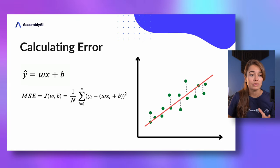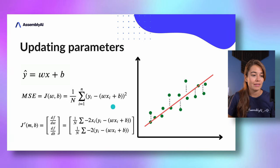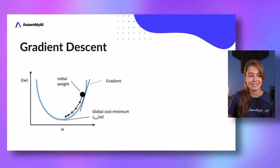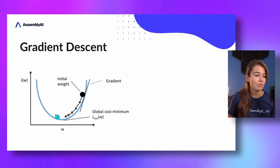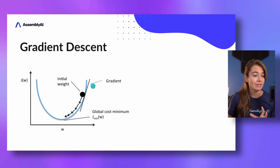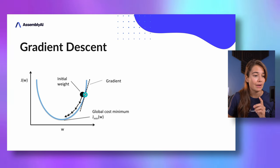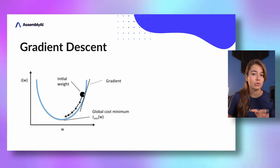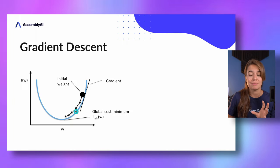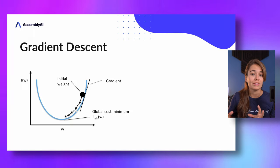To find that minimum, we need to calculate the derivative or the gradient of mean squared error. To do this optimization we use a technique called gradient descent. In this graph, given a parameter value, you can see the error that is calculated. What we do with gradient descent is calculate at a point, using the derivatives of the cost function, which direction to go to minimize the mean squared error.